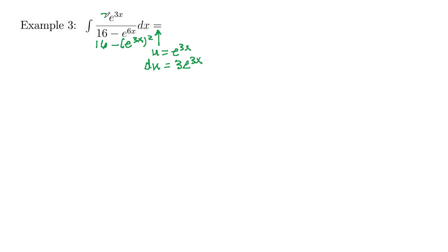Let's multiply by 3, and then compensate outside by multiplying by 1 third. Then I will have 1 third, and then here's my du. This will be integral du up top, and in the denominator, 16 minus u squared.